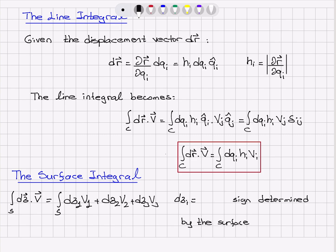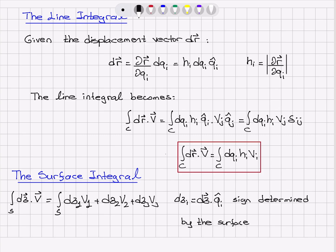Here d sigma_i is the component of the differential area vector on the q_i hat axis. The sign for this dot product is going to be determined by the surface orientation, so we have to make sure that the area vector always points normal to the surface and pointing outside.